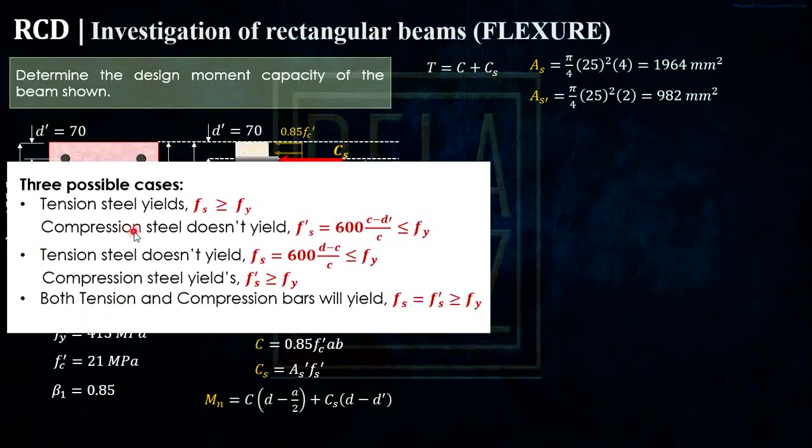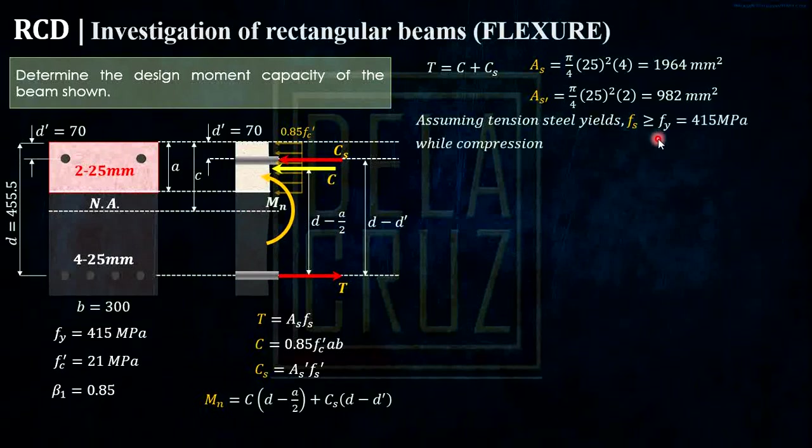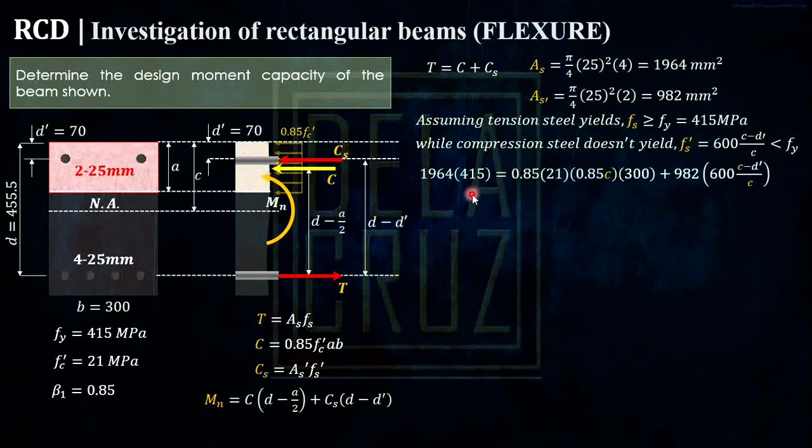Ano yung gagawin natin? We'll assume this first case. So assuming tension steel yields, so FS should be greater than FY, while compression steel doesn't yield, we'll use this formula, and that should be lesser than FY. So using this equation, the tension is AS times FS. So FS here should be 415. So we assume it yielded.